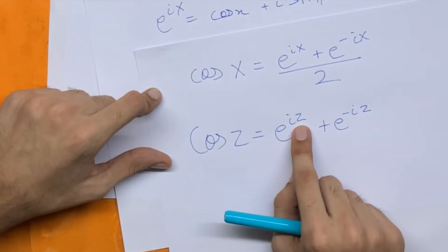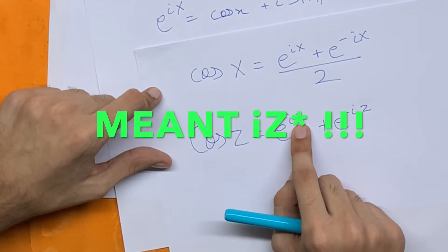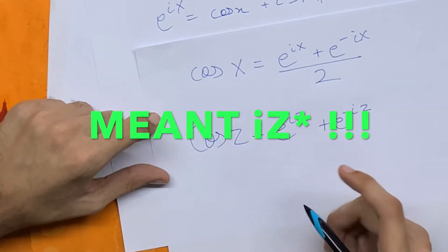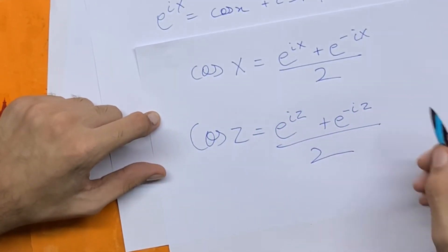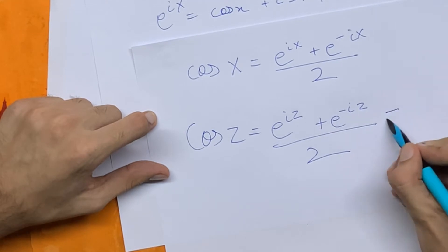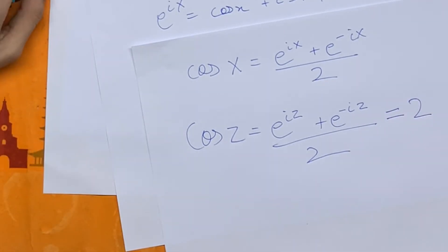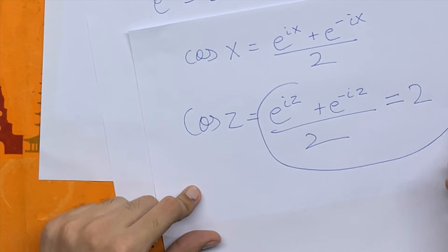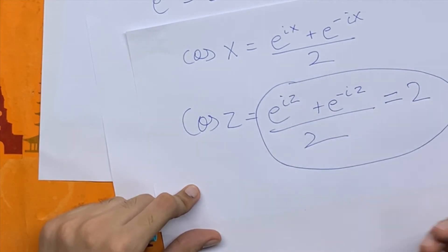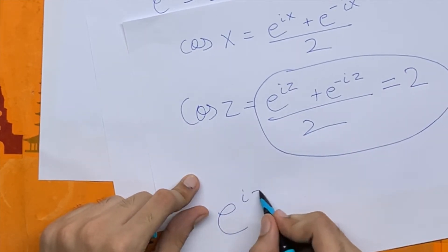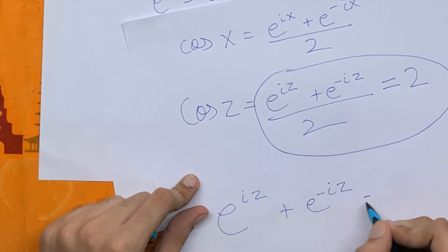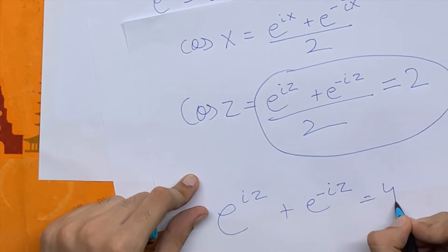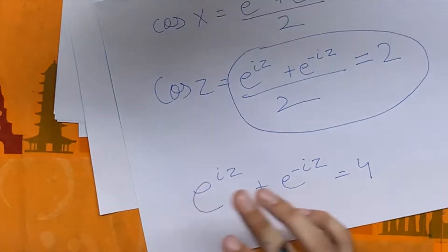I may have said minus z — I apologize for that, I meant z upon 2. And we know that cos of z is equal to 2 because that's what we're here to find. So now just looking at this equation, we have e to the power iz plus e to the power minus iz is equal to 4.